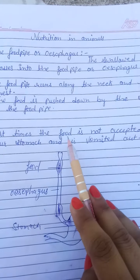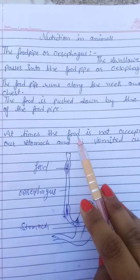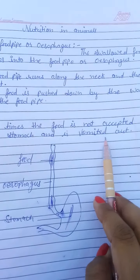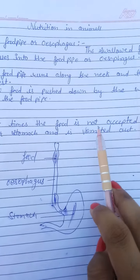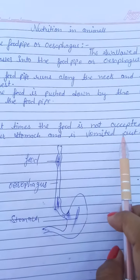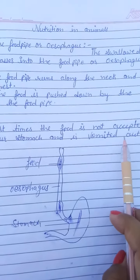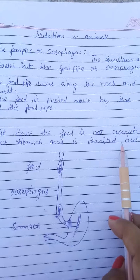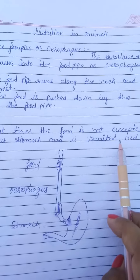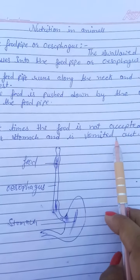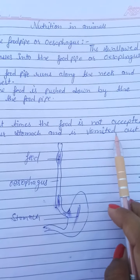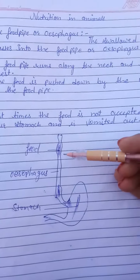Sometimes the food is not accepted by the stomach and it is vomited out. Generally, food is transferred from the esophagus to the stomach, where partial digestion of food starts. But sometimes the stomach does not accept our swallowed food, so the food comes back out from our mouth — this is called vomiting.